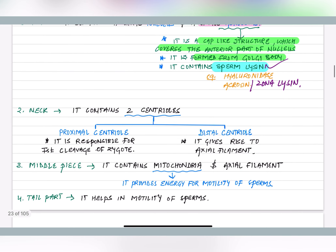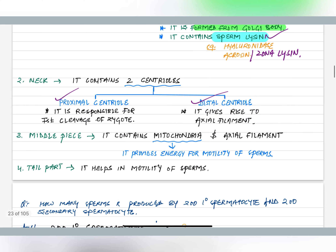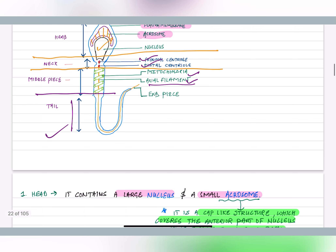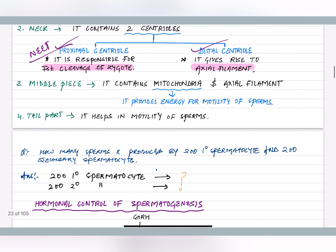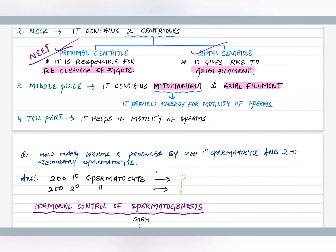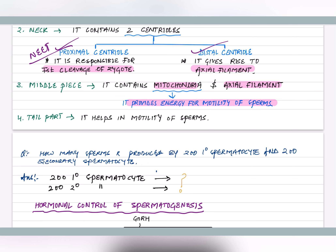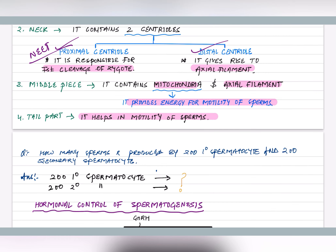The tail part also helps in the motility of the sperm. So the parts of a sperm are: head (nucleus + acrosome), neck (proximal and distal centrioles), middle piece (mitochondria + axial filament), and tail. The middle piece provides energy for motility via mitochondria; the tail aids motility directly.